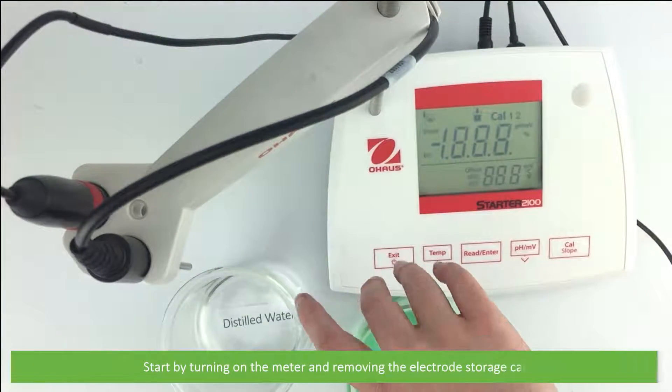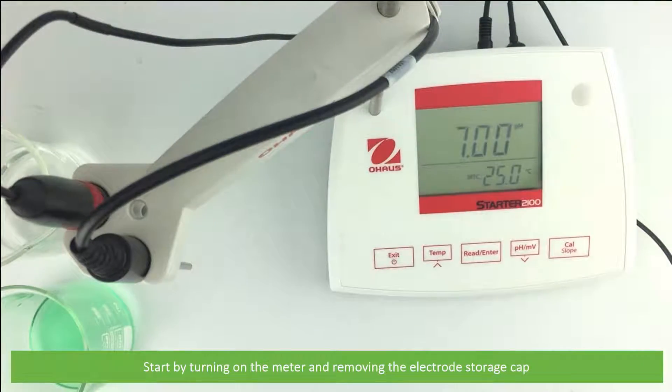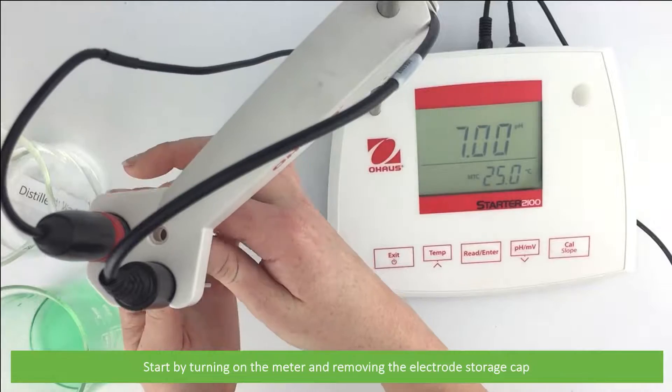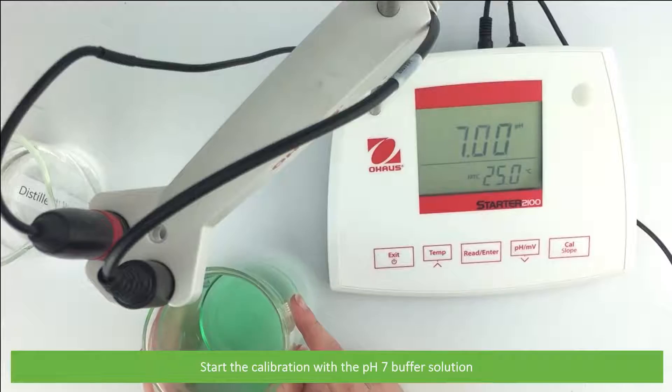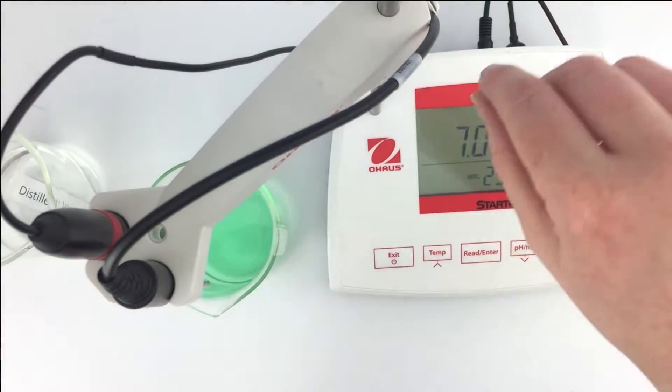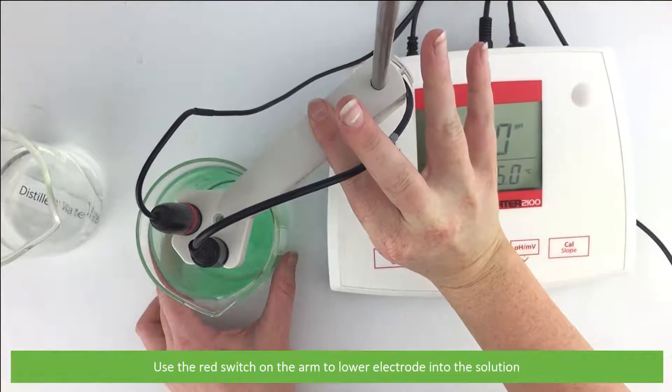Start by turning on the meter and removing the electrode storage cap. Start the calibration with the pH 7 buffer solution. Use the red switch on the arm to lower the electrode into the solution.